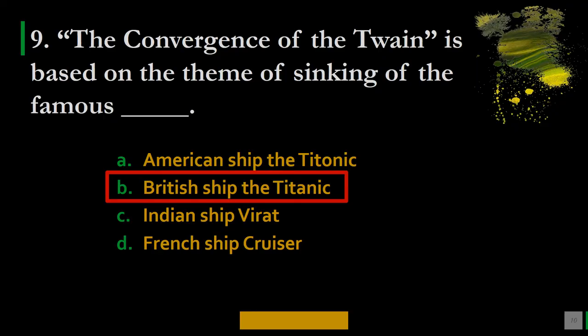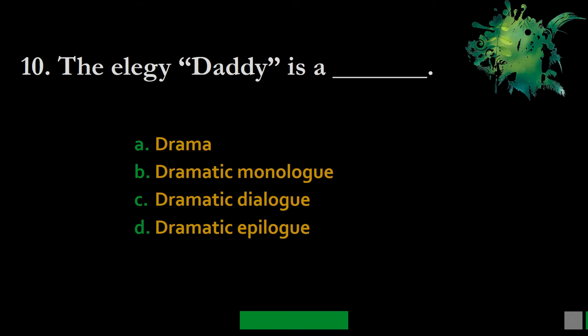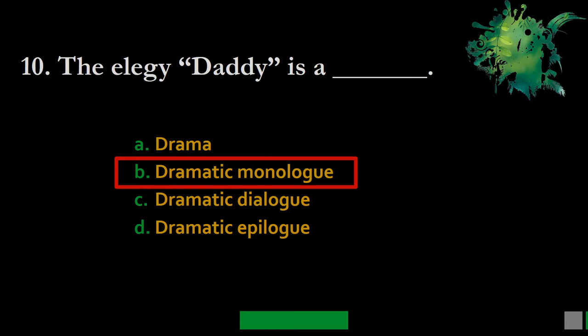Question 10: The elegy Daddy is a — A. Drama, B. Dramatic monologue, C. Dramatic dialogue, D. Dramatic epilogue. The correct option is dramatic monologue. Dramatic monologue means mono — single — and log means speaking, so the poet speaks to herself. The poet has dramatized the situation and very successfully conveyed her emotions to the readers.